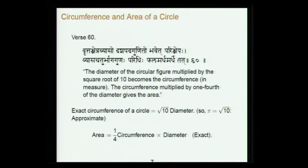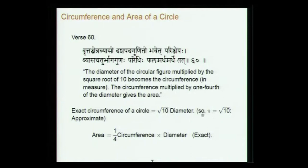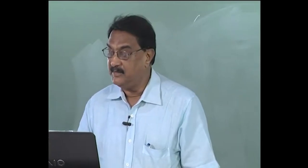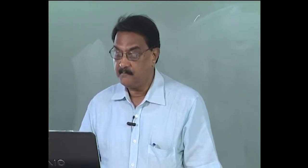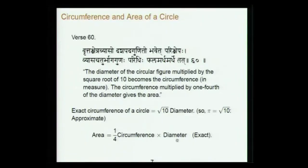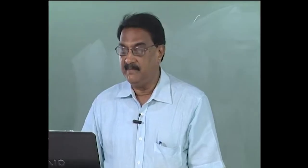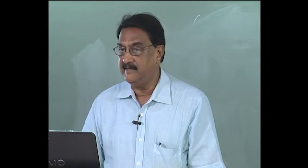He goes back to the circumference and area of a circle again. In verse 60 he says: the diameter of the circular figure multiplied by the square root of 10 becomes the circumference; the circumference multiplied by one-fourth of the diameter gives the area. So he says the exact circumference of a circle is √10 × diameter — essentially taking π = √10, which is a Jaina value. The area formula — one-fourth circumference times diameter — is exact whatever be the relation between circumference and diameter.